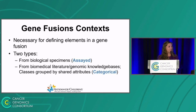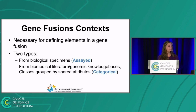Next, we need to discuss gene fusion contexts, which are necessary for determining the elements involved in a fusion. The specification defines two types: assayed, which come from biological specimens, and categorical, which are general classes of fusions grouped by their shared attributes. You'll often see these in genomic knowledge bases and literature.